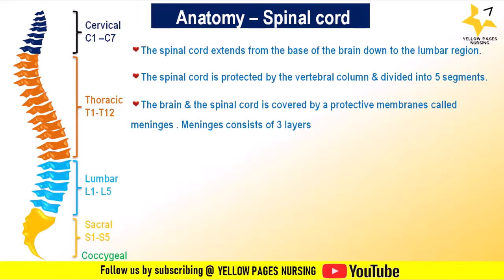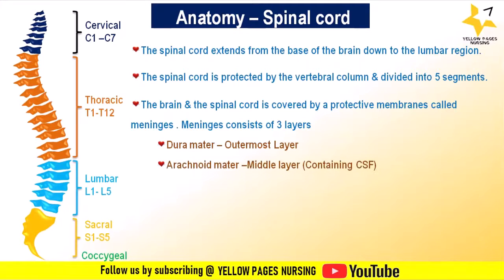The brain and spinal cord are covered by a protective membrane called the meninges, which consists of three layers. The dura mater is the outermost tough membrane surrounding the spinal cord. The arachnoid mater is the middle layer, a thin membrane containing the cerebrospinal fluid in the subarachnoid space. The pia mater is the innermost delicate membrane adhering closely to the surface of the spinal cord.